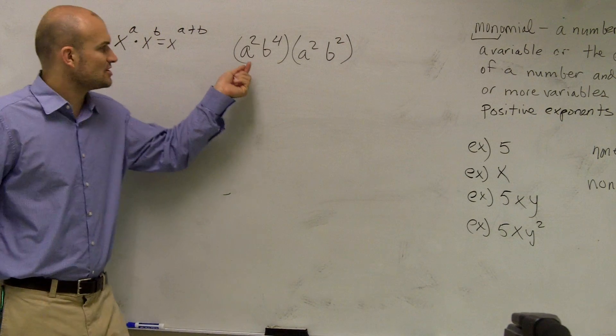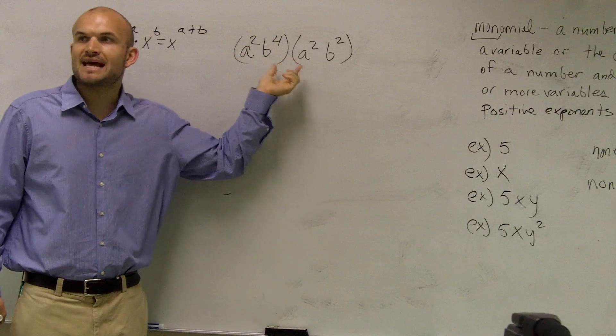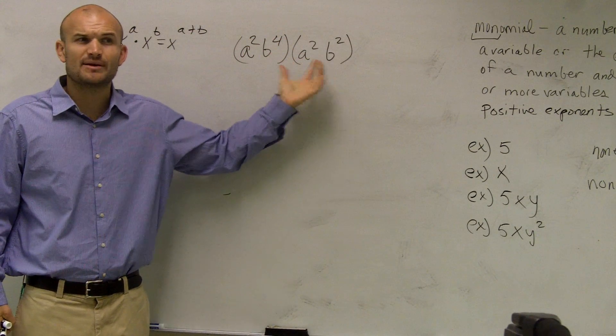So therefore, I cannot just say a times b is going to be ab to the 2 plus 4. They have to have this exact same base. Does that make sense? Everybody needs to see that.